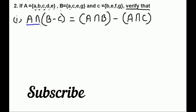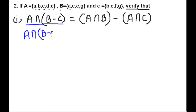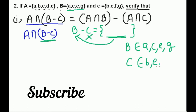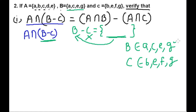First, we will solve A intersection (B minus C). To do this, we first solve B minus C. B minus C means we write the elements that are only in Set B and not in Set C. Elements of Set B are {A, C, E, G} and elements of Set C are {A, E, F, G}. We write elements that are in B but not in C — so A and C are not in Set C.